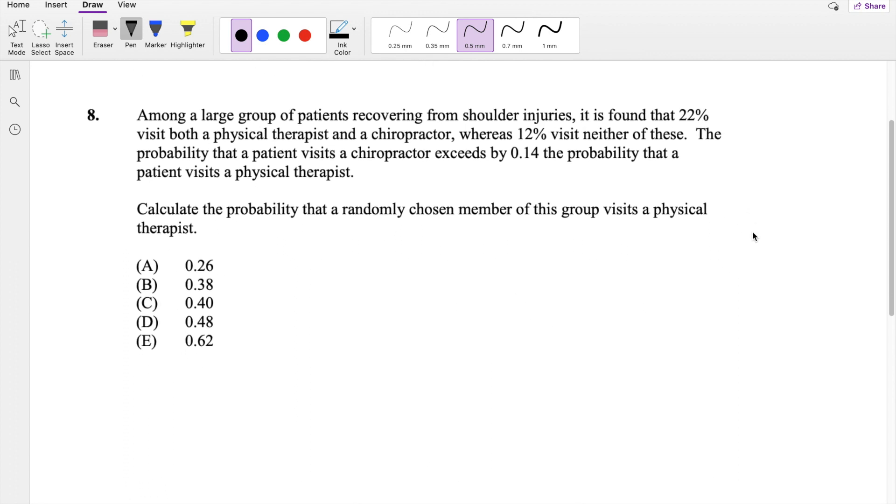Okay, I assume you've already tried it, so let's dive right in. Among a large group of patients recovering from shoulder injuries, it is found that 22% visit both a physical therapist and chiropractor, whereas 12% visit neither of these. The probability that a patient visits a chiropractor exceeds by 0.14 the probability that a patient visits a physical therapist.